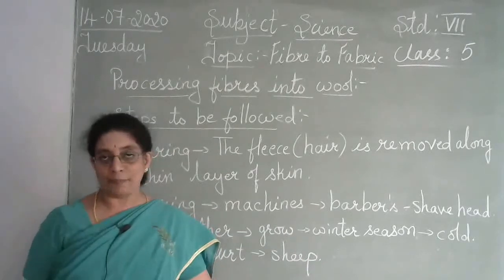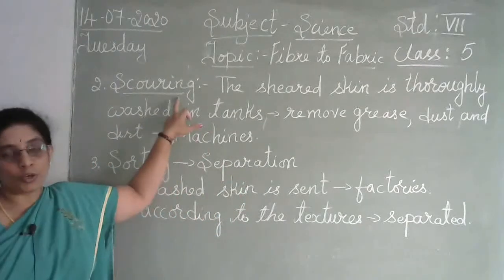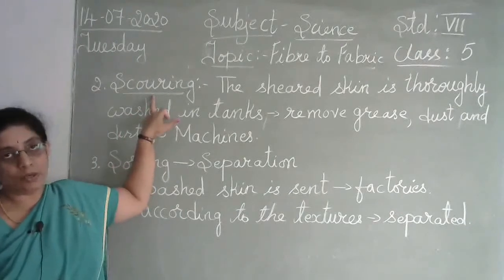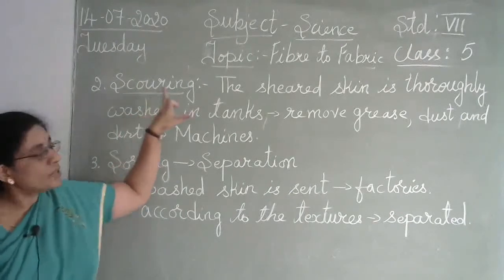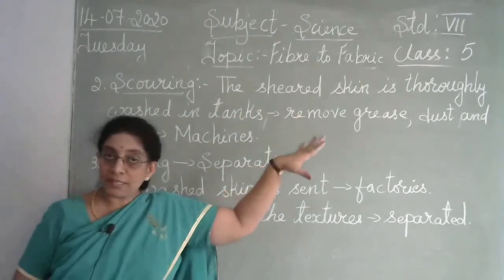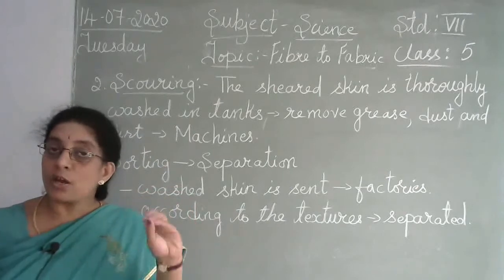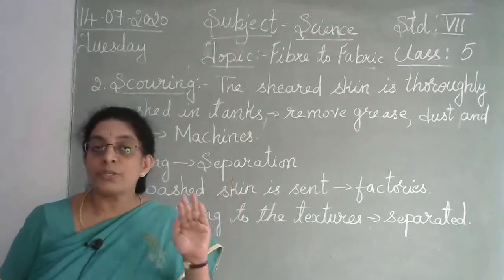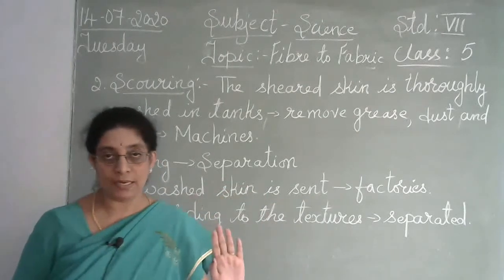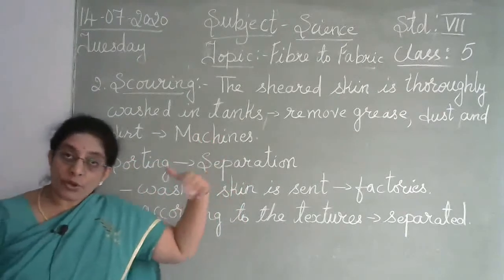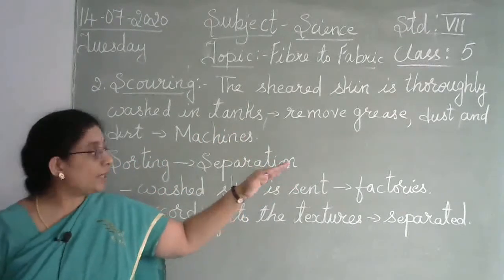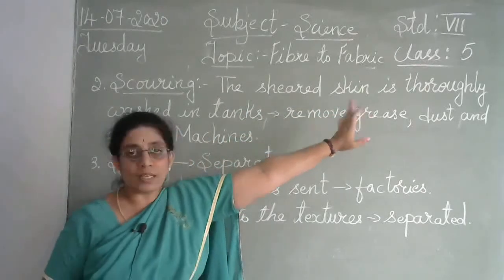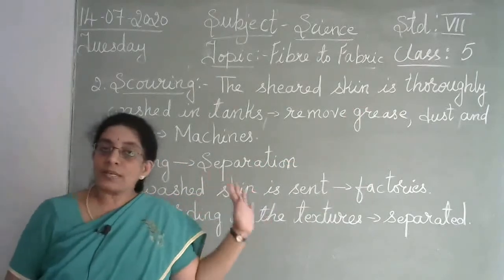The second step is called scouring. In the first step the hair was removed along with a layer of skin. Now in scouring, the sheared skin is thoroughly washed — it is placed in huge tanks and washed completely clean using water.